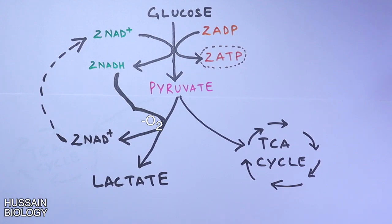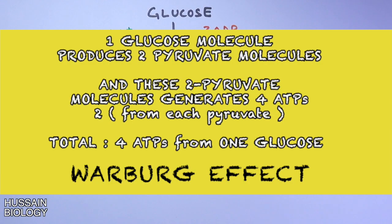In cancer cells, pyruvate always leads into lactate fermentation whether oxygen is present or absent. Calculating the energy output: one glucose molecule produces two pyruvate molecules, and these produce four ATP molecules in total, meaning a cancer cell produces four ATP molecules per glucose molecule.